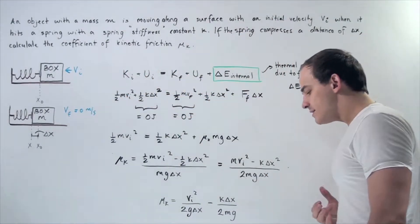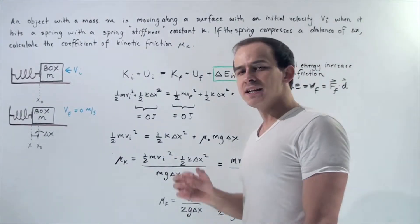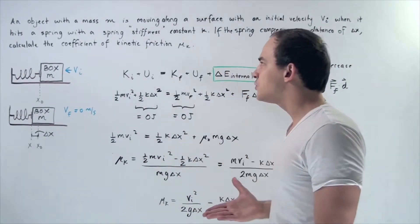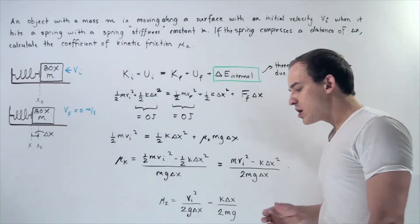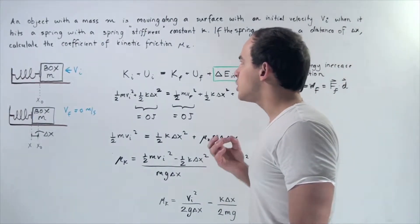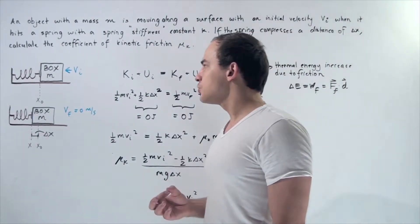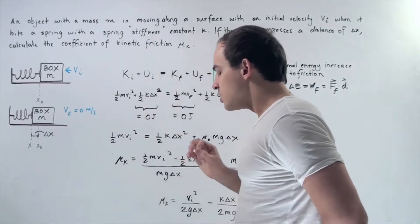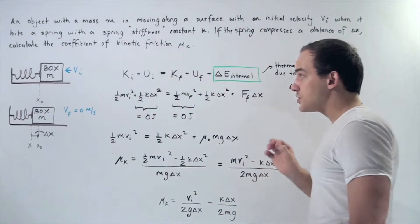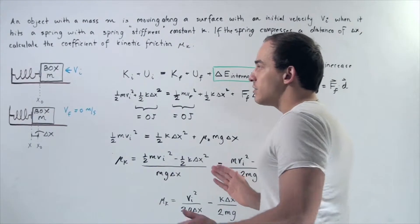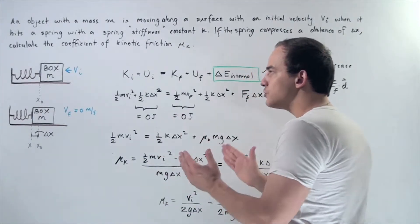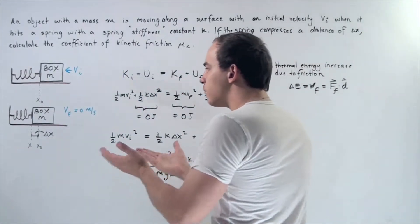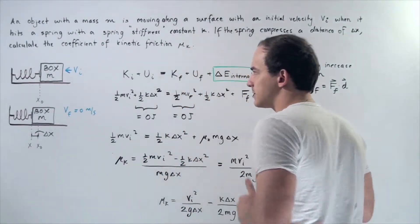In this example, we are looking at non-conservative forces acting on our moving object, so we have to use the law of conservation of energy. The law of conservation of energy states that the total sum of all the energies initially is equal to the sum of all the energies in the final system.